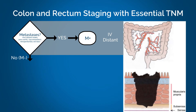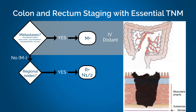If there are no metastases, we would then see if there is evidence of nodal disease. If there is, the patient is classified as stage three, and the registrar need not look any further for evidence of the extent of disease.